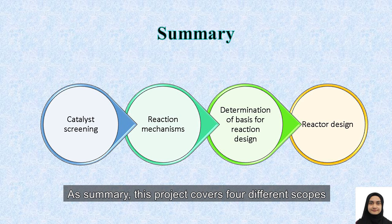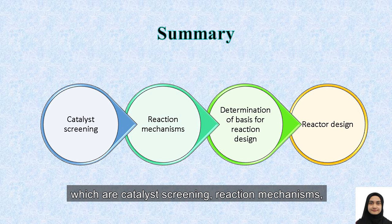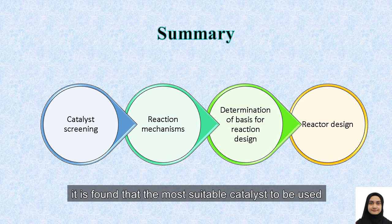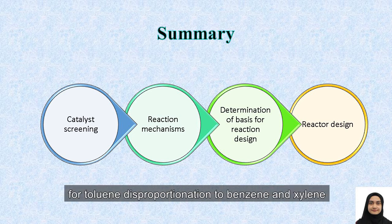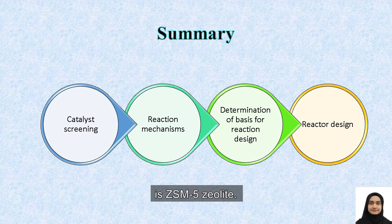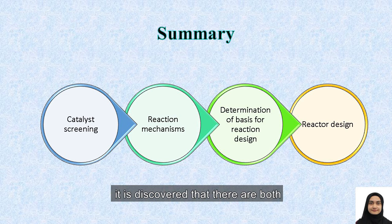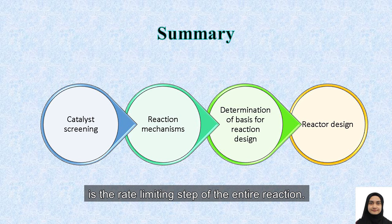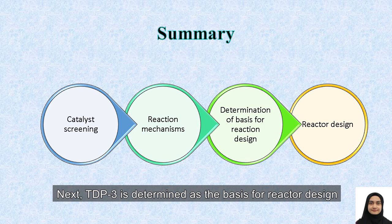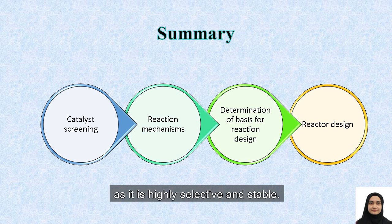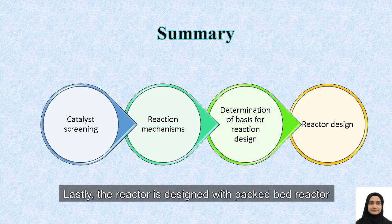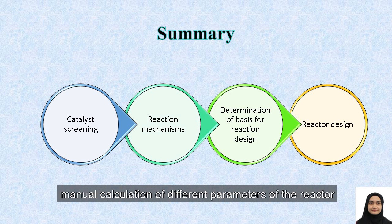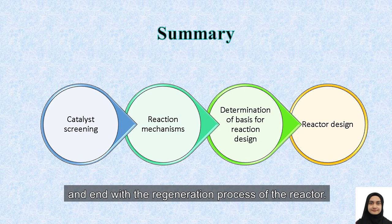As a summary, this project covers four different scopes: catalyst screening, reaction mechanisms, determination of basis for reactor design, and reactor design. Through catalyst screening, it is found that the most suitable catalyst for toluene disproportionation to benzene and xylene is ZSM-5 zeolite. Through reaction mechanisms, it is discovered that there are both primary and secondary reactions, and the primary reaction is the rate-limiting step. TDP3 is determined as the basis of reactor design as it is highly selective and stable. Lastly, the reactor is designed with a packed bed reactor as the chosen type, accompanied by manual calculation of different parameters and ending with the regeneration process. Thank you!